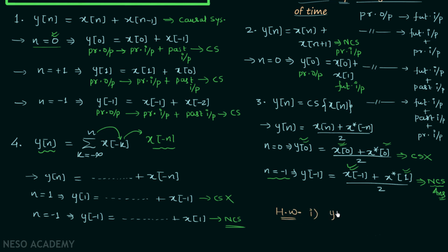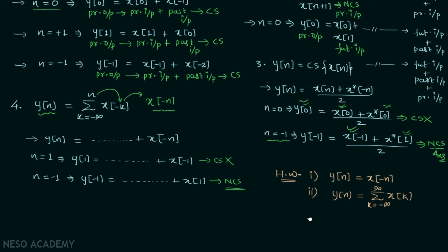Now for the homework problems. First: y[n] = x[-n] — determine if causal or non-causal. Second: y[n] = Σ(k = -∞ to +∞) x[-k] — causal or non-causal? Third: y[n] = Σ(k = -∞ to n) x[-k] (note the lower limit should be -n). In all three cases determine whether the system is causal or non-causal and post your answers in the comment section.